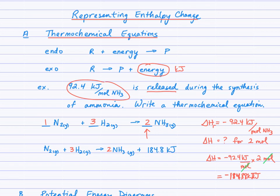If this reaction had been an endothermic reaction, then the energy term would have been written on the left side of the arrow. ΔH would have been calculated as positive because the molar enthalpy would have been positive.